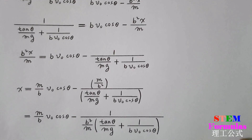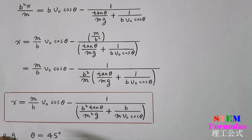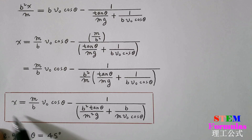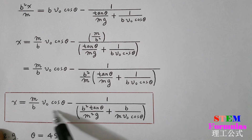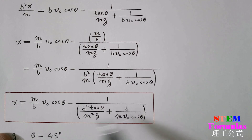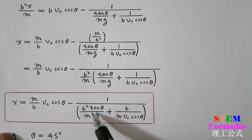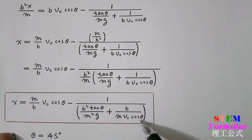Finally, we get x in this boxed equation: x equals m divided by b, times v₀cosθ, minus 1, over [b² tan θ divided by (m²g) plus b divided by (m·v₀cosθ)].